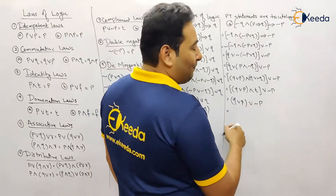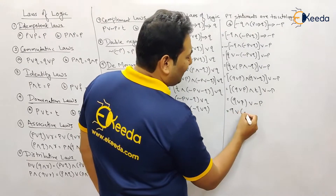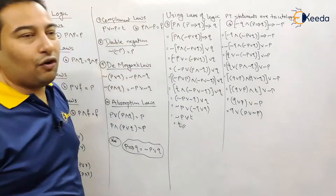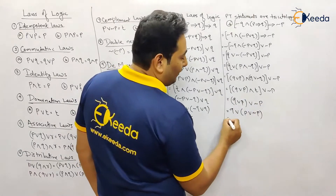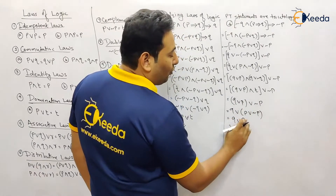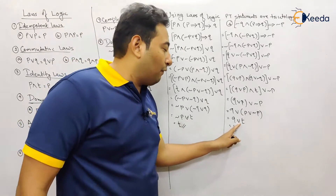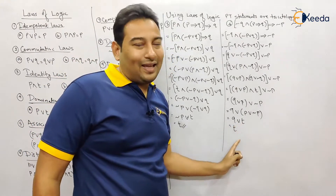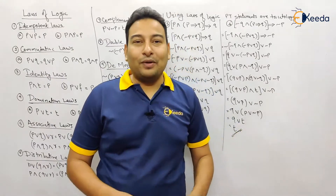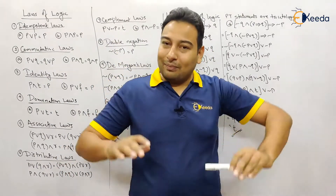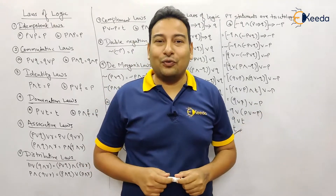So we have: (q or p) and true, or negation p. The and with true means the expression depends on q or p, giving q or p or negation p. Since all signs are or, apply the associative law and group p or negation p — which is always true. Then q or true is true by the domination law. We have proved it is a tautology. I hope you're getting comfortable with implementing these laws. We'll solve more examples — thank you for watching, take care.